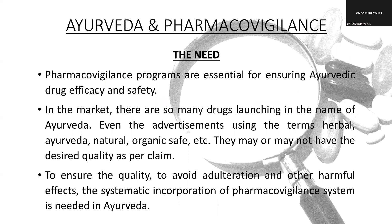Ayurveda and pharmacovigilance. Pharmacovigilance programs are essential for ensuring Ayurvedic drug efficacy and safety. In the market, there are many drugs launched in the name of Ayurveda, with advertisements using terms like herbal, Ayurveda, natural, organic, and safe. They may or may not have the desired quality as per the claim. To ensure quality, avoid adulteration, and prevent other harmful effects, systematic incorporation of a pharmacovigilance system is needed in Ayurveda.